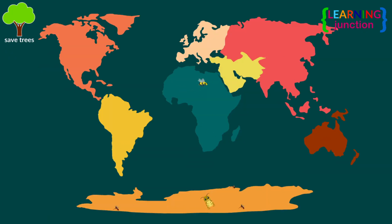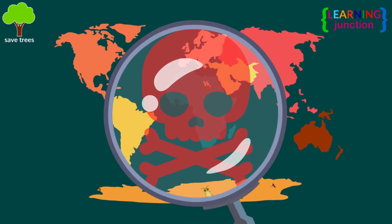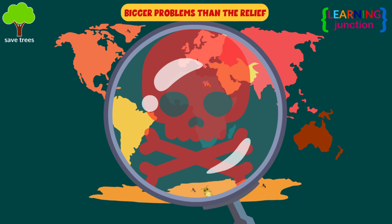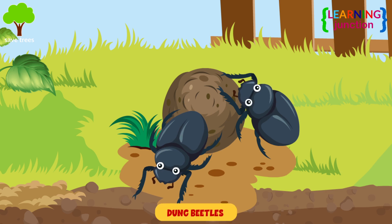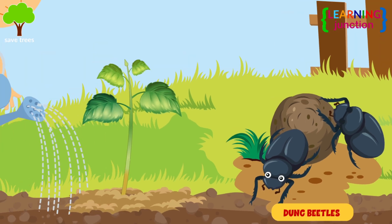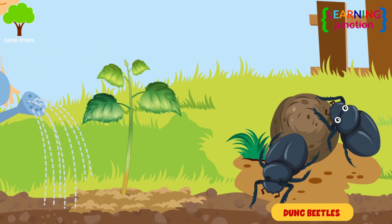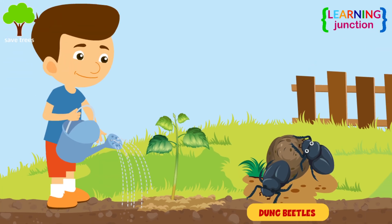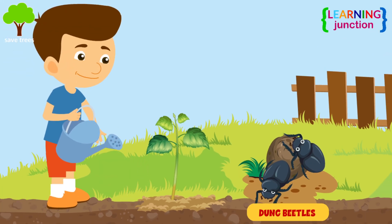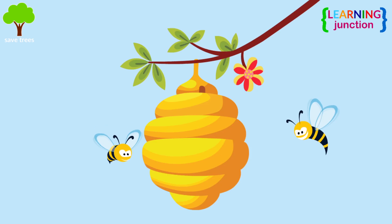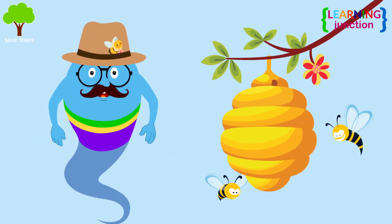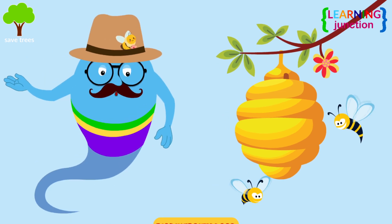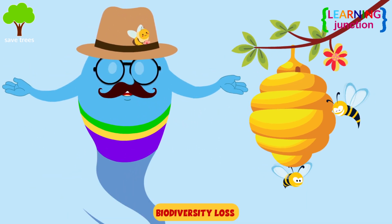But if humans lose all insects on the planet, they will face much bigger problems than the relief from the insects. For example, dung beetles lay their eggs on poop, and their larvae feed on that. They help plants grow by quickly removing poop from vegetation. If you lose all the honeybees, you will not be able to pollinate flowers, and you will have to lose a lot of plant species in the process.